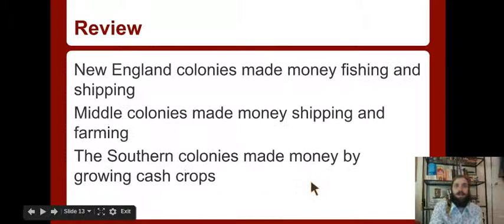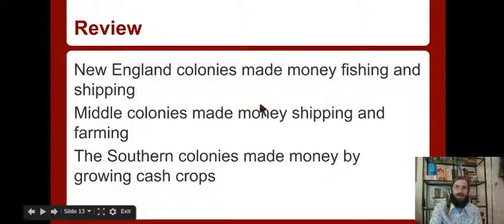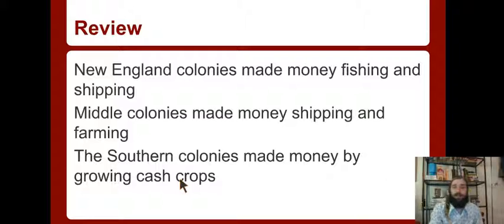Quick review: New England colonies made money fishing and shipping because they couldn't really farm. Middle colonies made money shipping and farming. Southern colonies made money by growing cash crops. So you see there's almost a progression - the farther south you go, the better it is for farming. Poor soil and bad weather meant no farming in New England. Middle colonies had a lot of farming in grains and some shipping. Southern colonies had intense agriculture - cash crops - sometimes two or three growing seasons in one year because it stayed warm so long.